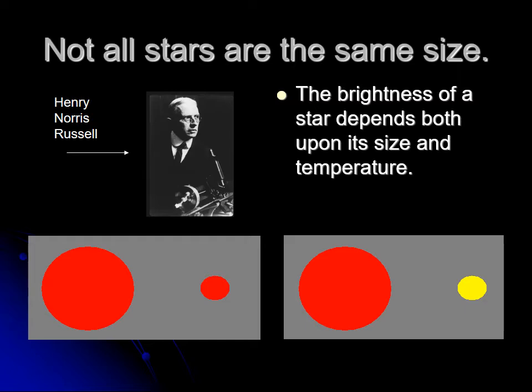American astronomer Henry Norris Russell started studying the relationship between a star's size and temperature. He noticed that the width of the spectral lines — remember Walter Adams, also an American astronomer — the width of the spectral lines turned out to be related to the absolute magnitude. He started realizing that hotter stars tended to have smaller absolute magnitudes, meaning brighter, and that there was a general trend where many stars were about the same size.